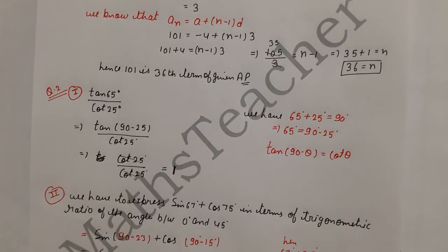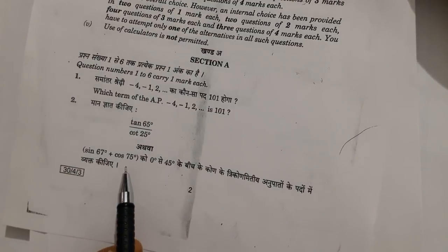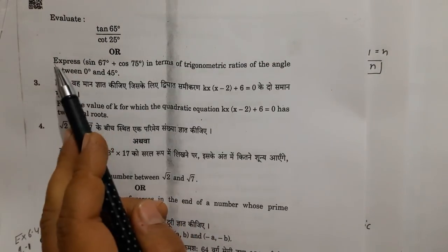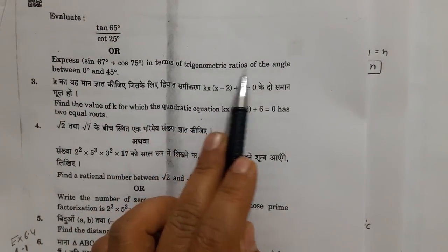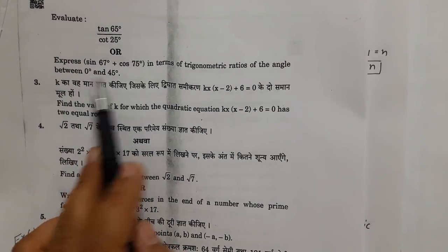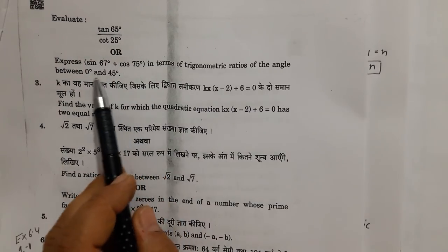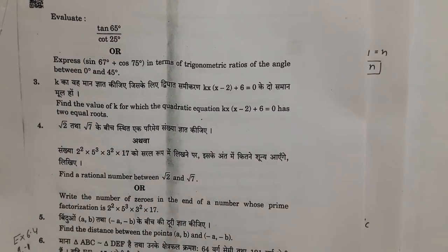Second part: this is your question sin(67°) + cos(67°). Express in terms of trigonometry ratio between 0 and 45. So this angle between 0 and 45, you have to change between 0 and 45.